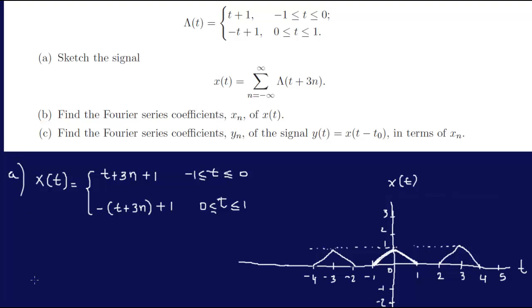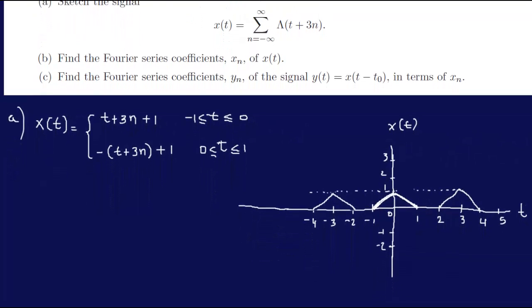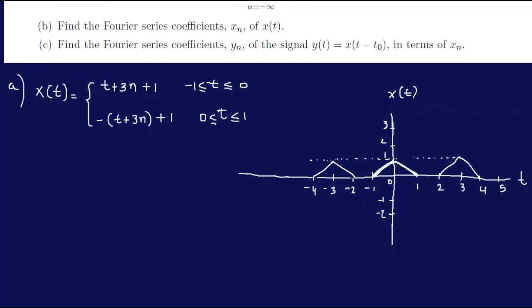Now part B is to find the Fourier series coefficients X(N) of x(t). If we go to the FE handbook on page 199, Fourier series, those coefficients are given by A(N) and B(N) — here it's just X(N), which is essentially the same thing as finding A(N), B(N), etc.